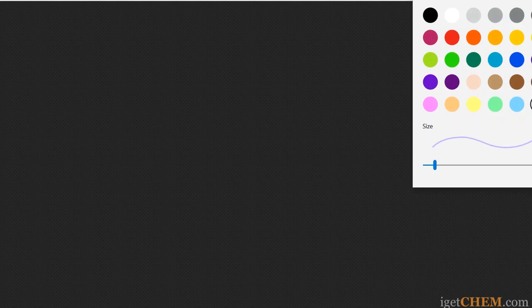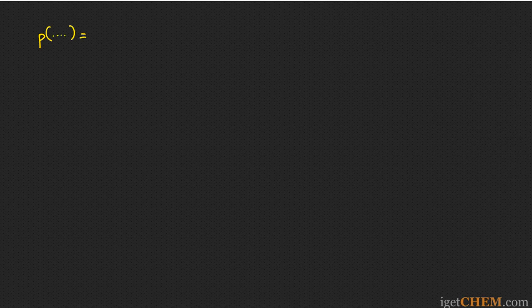Before we go to the solution, let's look at what the symbol P actually means. The symbol P is used routinely in acid-base chemistry, and the P value of a certain quantity is defined as the negative log base 10 of that quantity.